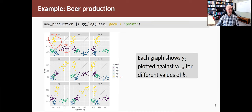The first graph shows yt against yt minus one, against the previous observation. The second graph, headed lag two, shows yt versus yt minus two, so two periods ago.